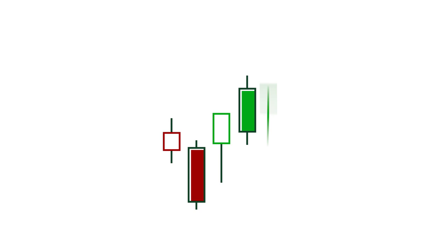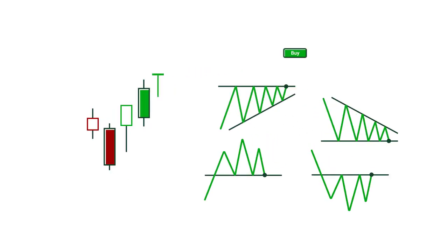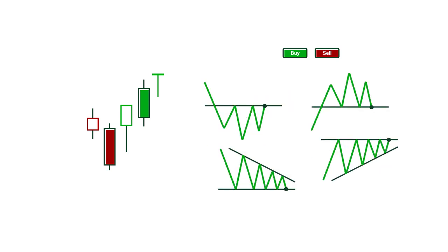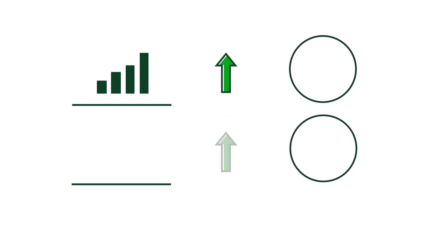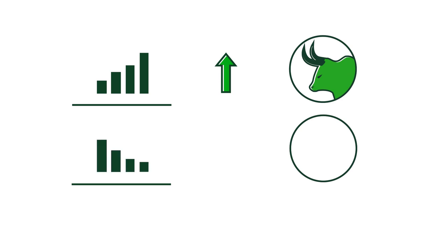So let's get right to it. Like candlestick patterns, chart patterns generate buy and sell signals when they give traders an indication that a trend may continue or reverse. These signs are generated when a pattern is confirmed. Like with multi-candle formations, patterns indicating that a trend may continue or start trending upward are called bullish, while those indicating that a trend may continue or start trending downward are called bearish.